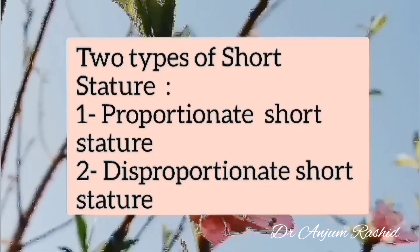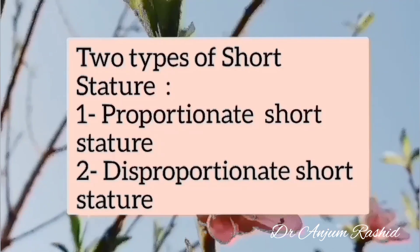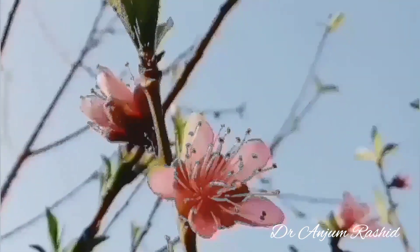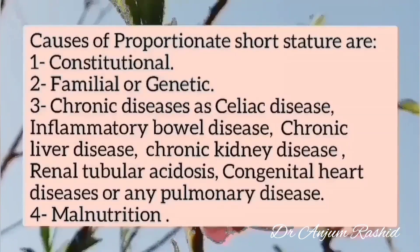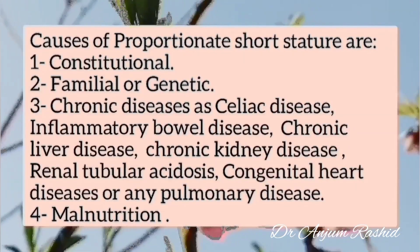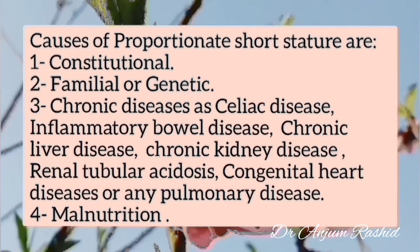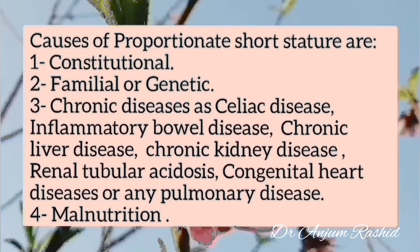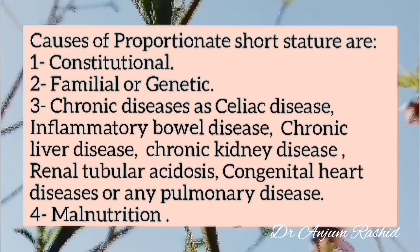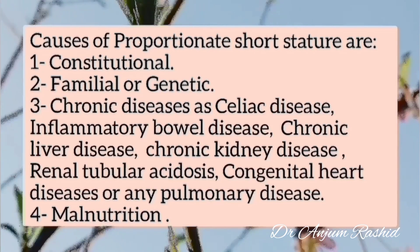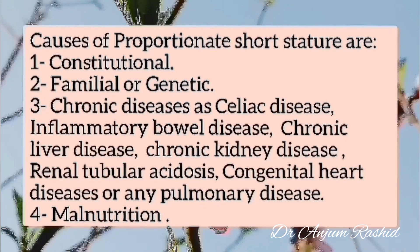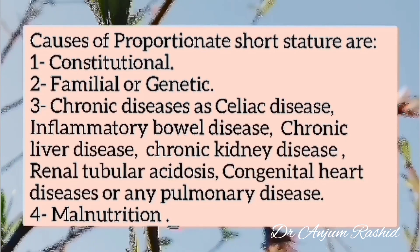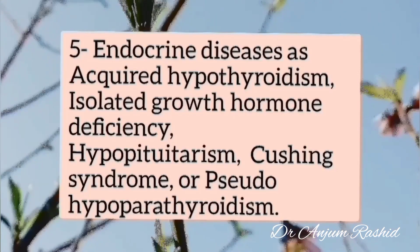There are two types of short stature: number one, proportionate short stature, and number two, disproportionate short stature. The causes of proportionate short stature are: number one, constitutional; number two, familial or genetic; number three, chronic disease such as celiac disease, inflammatory bowel disease, chronic liver disease, chronic kidney disease, renal tubular acidosis, congenital heart disease, or any pulmonary disease; and number four, malnutrition.